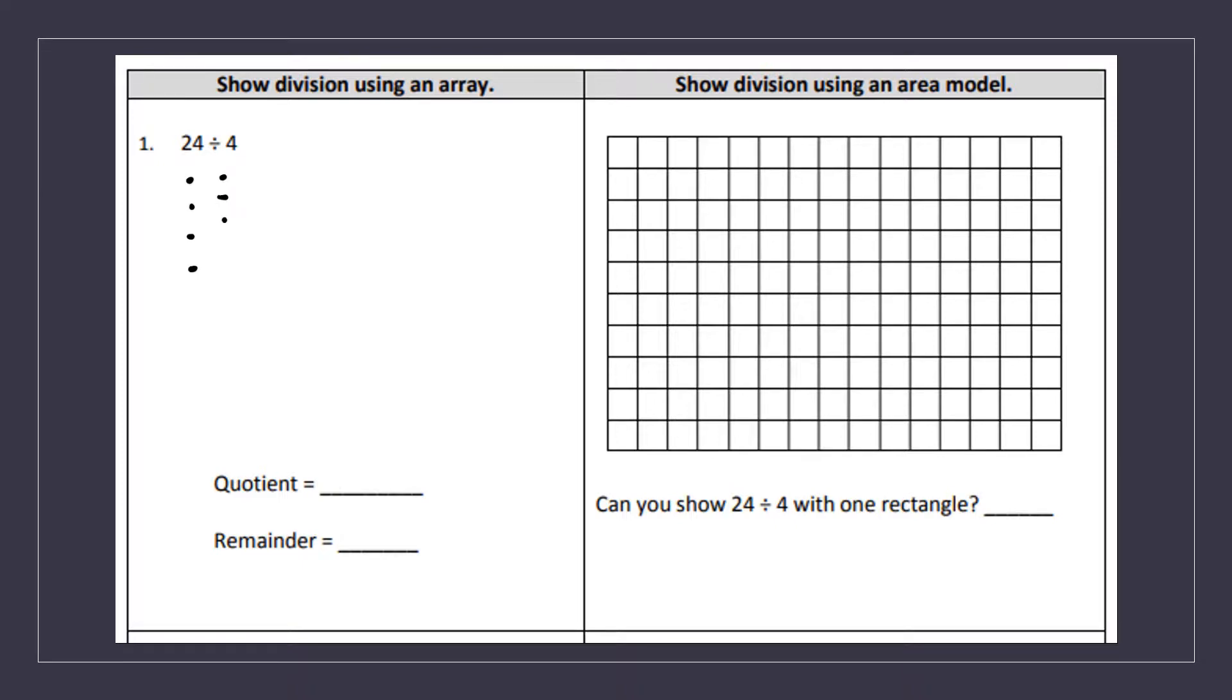So I have 4, 8, 12, 16, 20, 24. So now I'm going to count and see there were four up and down. Now I'm going to count and see how many went side to side.